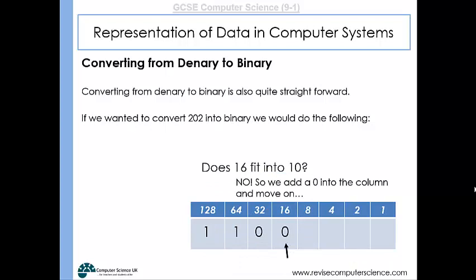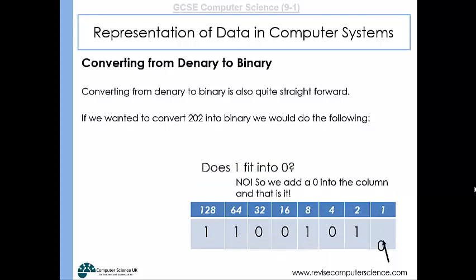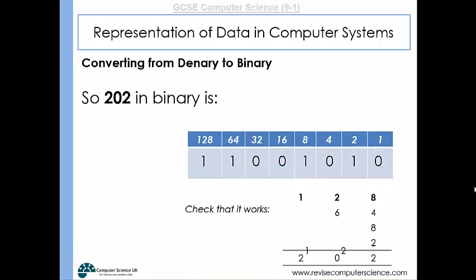Does 8 fit into 10? Yes. So we put a one in that column and subtract 8 from 10, leaving 2. Does 4 fit into 2? No. Does 2 fit into 2? Yes, so we put a one in that column. And finally, does 1 fit into 0? No, so we put a zero. So 202 in binary is 11001010. As a check: 128 + 64 + 8 + 2 = 202. That's how you convert from denary into binary.